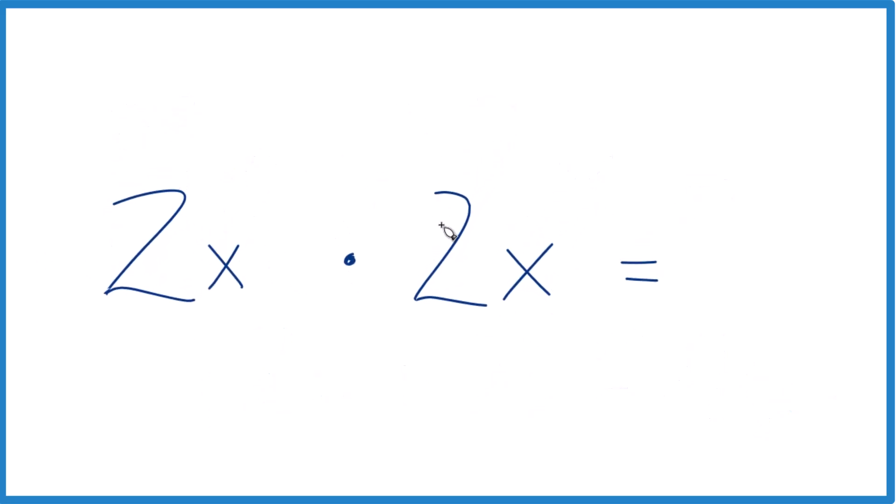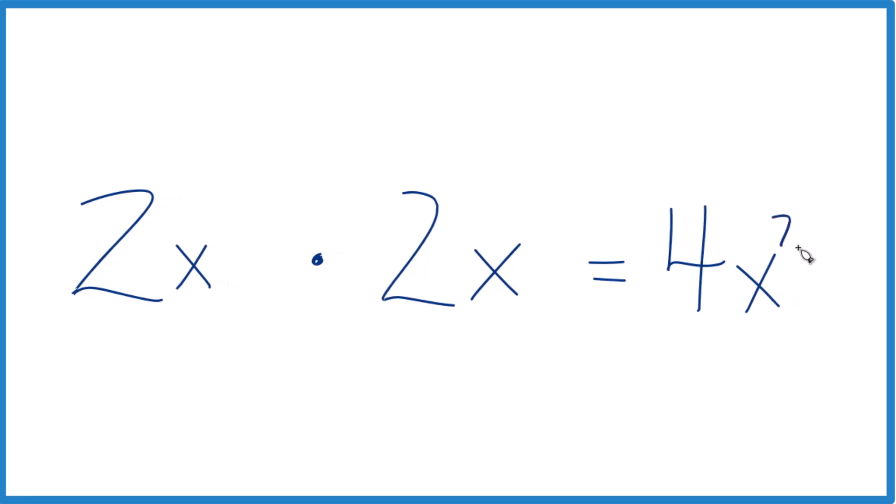Really all we do is take 2 times 2, that gives us 4; x times x, that gives us x squared. And 2x times 2x is 4x squared. And that's really all there is to it.